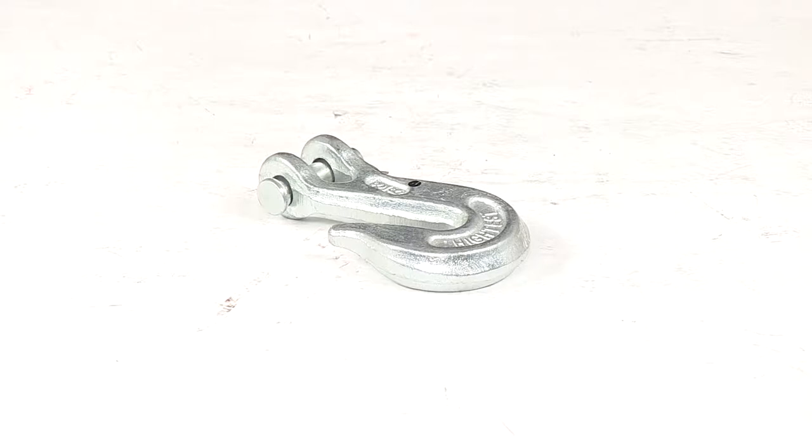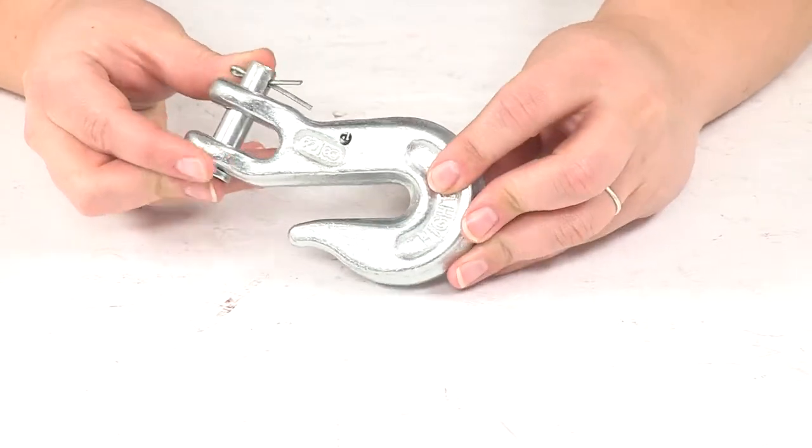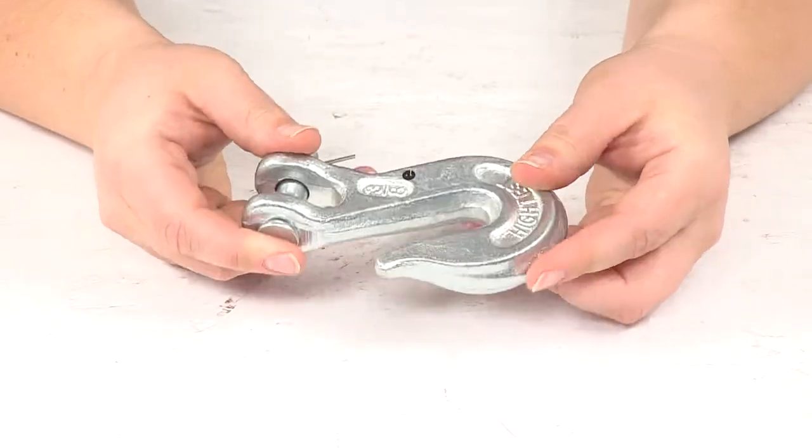Today we're going to take a look at the replacement 3 1/8 inch clevis grab hook with safety pin for Titan chain transport chains. This is a direct replacement from Titan to replace the grab hook from your Titan chain transport chains.